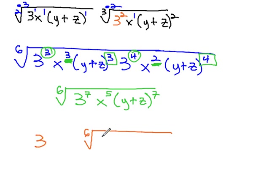1, 3 comes out, and 1, 3 remains inside. On the x's, 5 divided by 6 is 0 remainder 5. All 5's remain inside the radical.